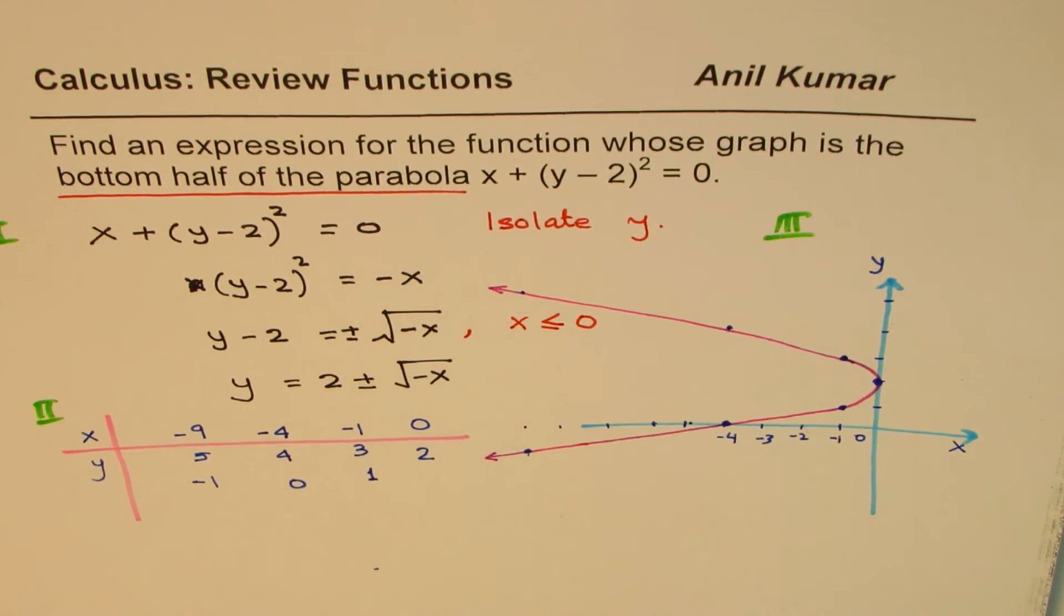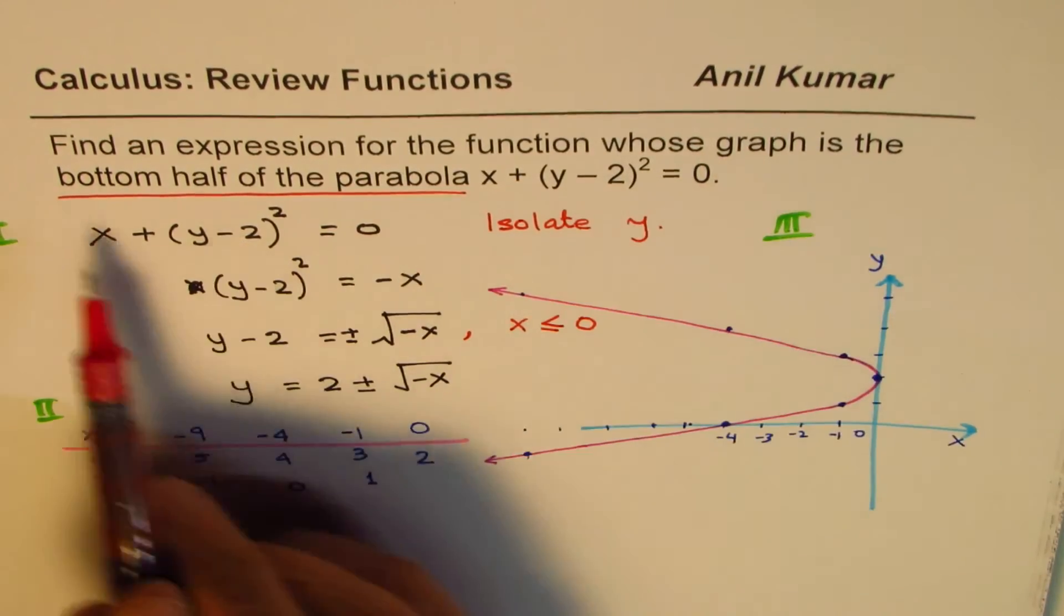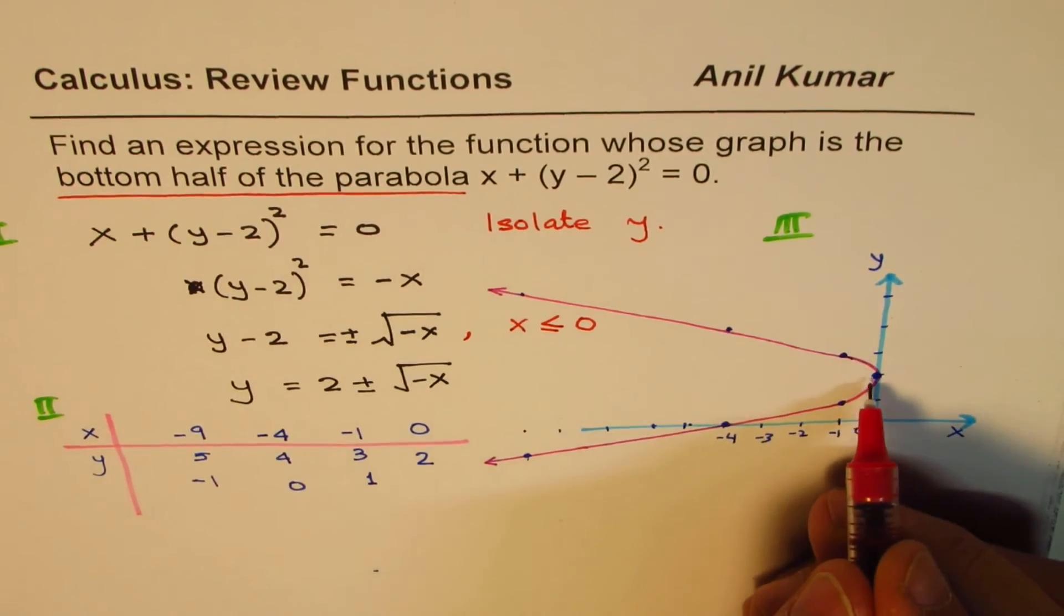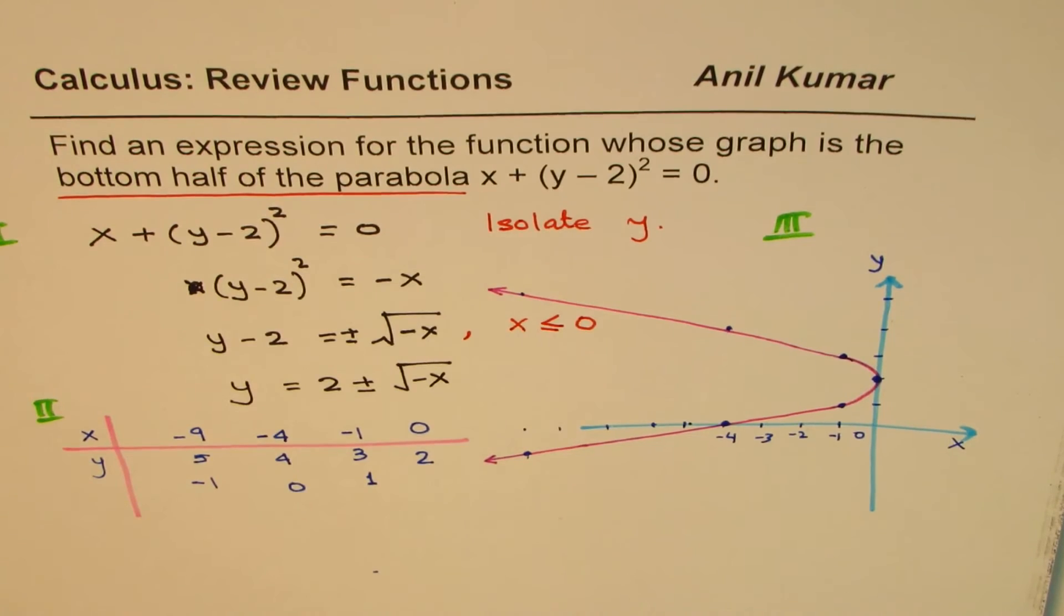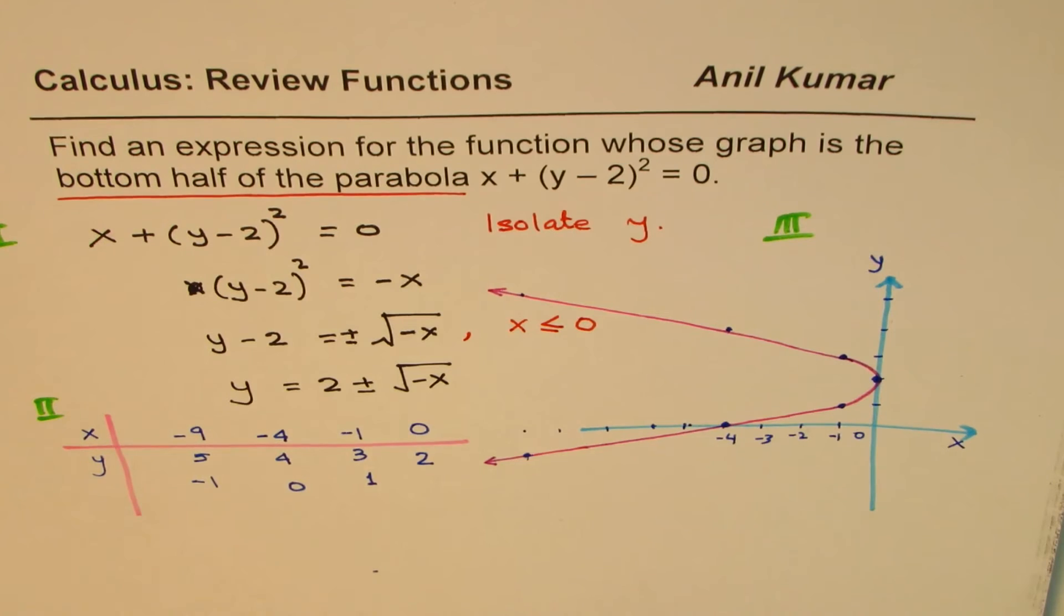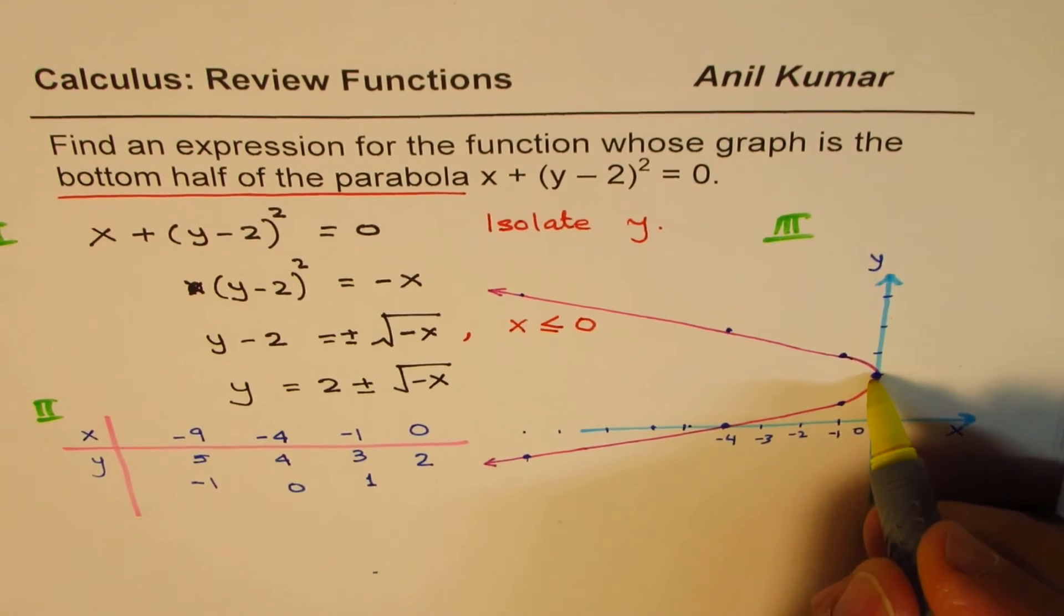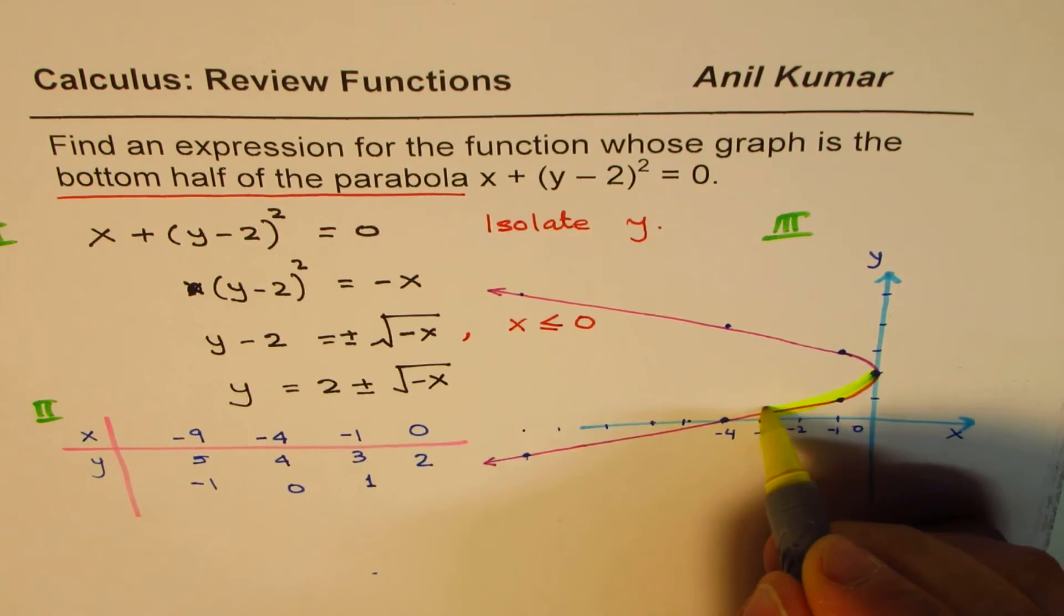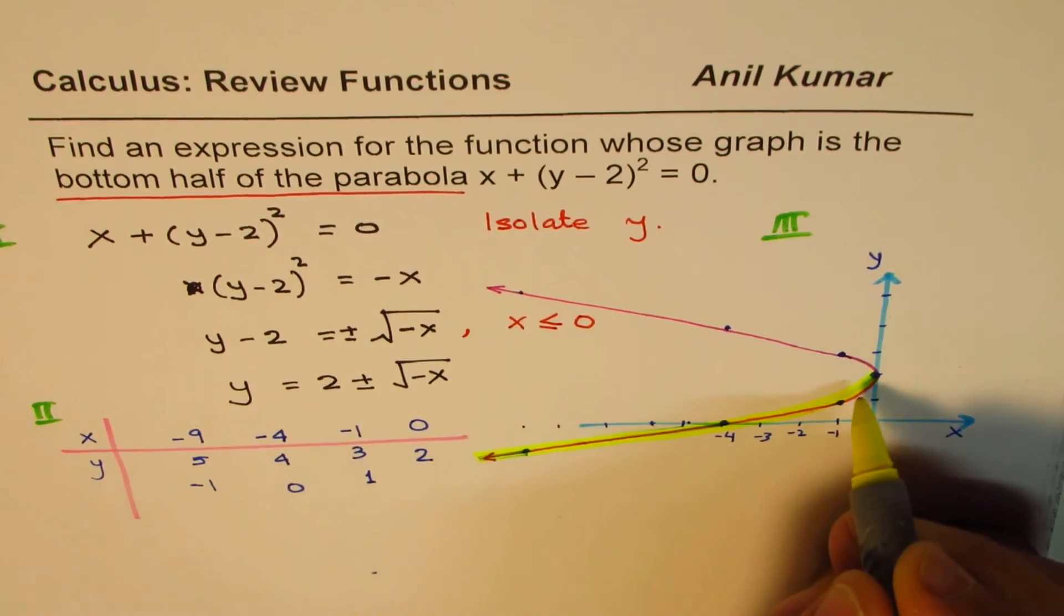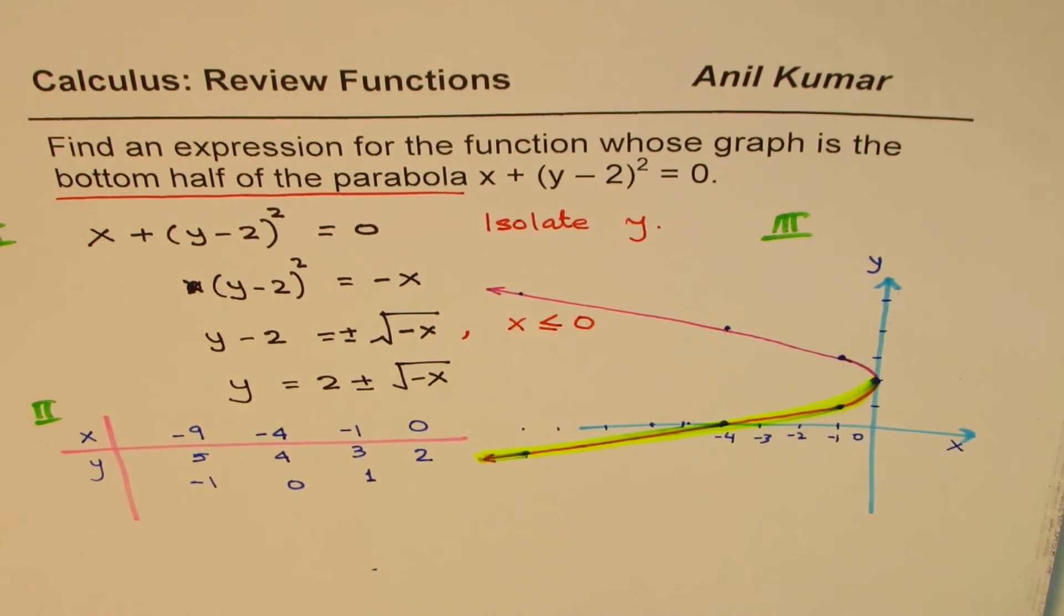Now, what are we saying? We are saying we want the bottom half of the parabola. So bottom half here is, let me highlight this. This is the bottom half of the graph. Do you see that? And we need the equation of this bottom half of the graph.